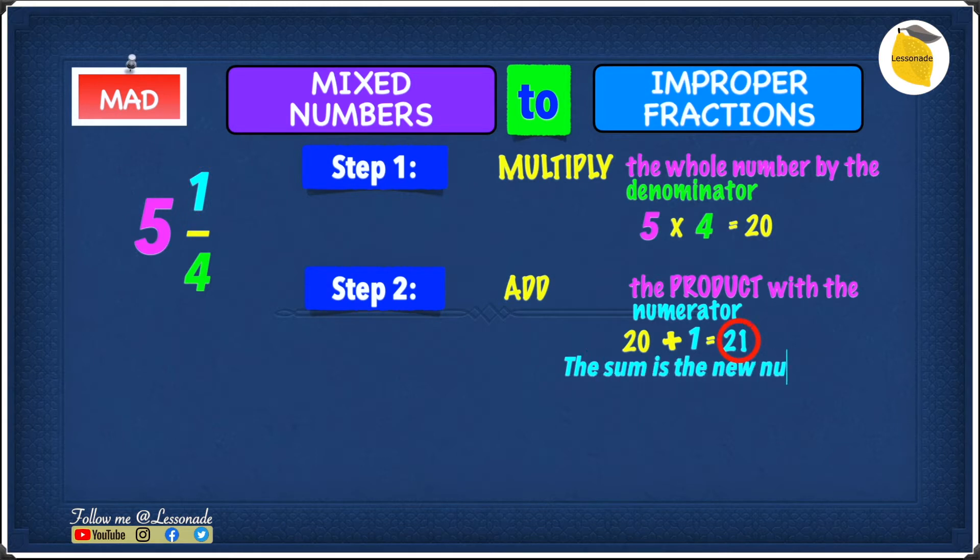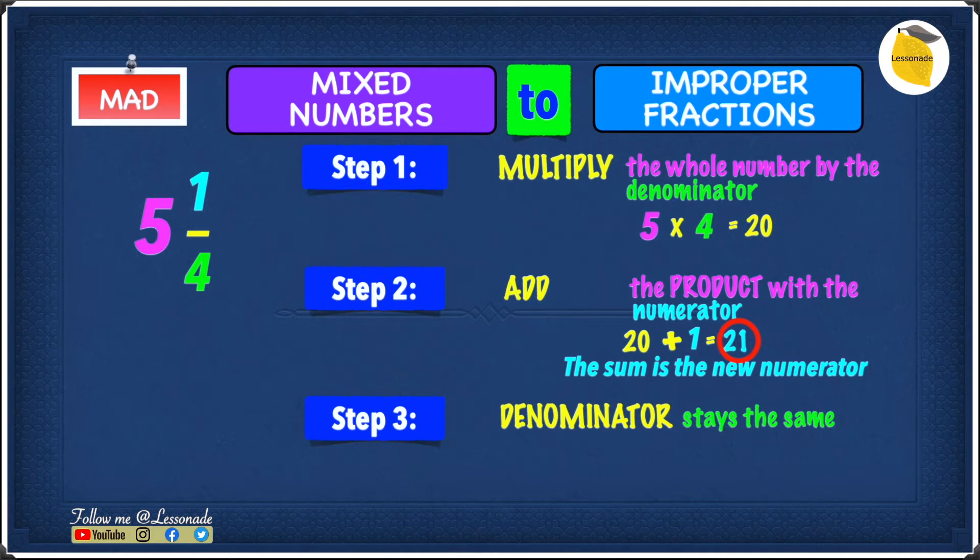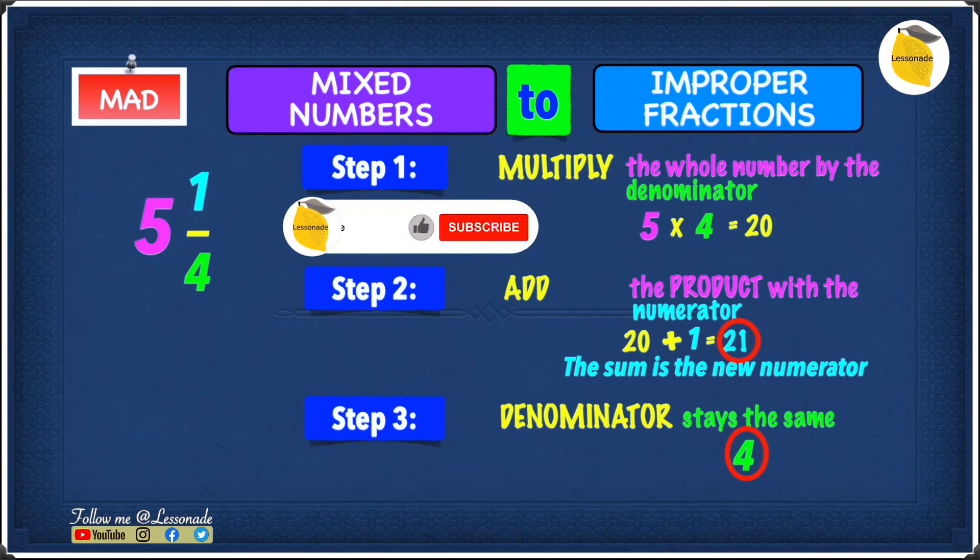So therefore, the sum is the new numerator. The sum we got is 21, so that's going to be our new numerator. Let's go into the final step, and step 3 is the denominator. So the denominator stays the same. The denominator is 4 and the numerator is 21. So 21 over 4, we know that the fraction is definitely going to be 21 over 4.